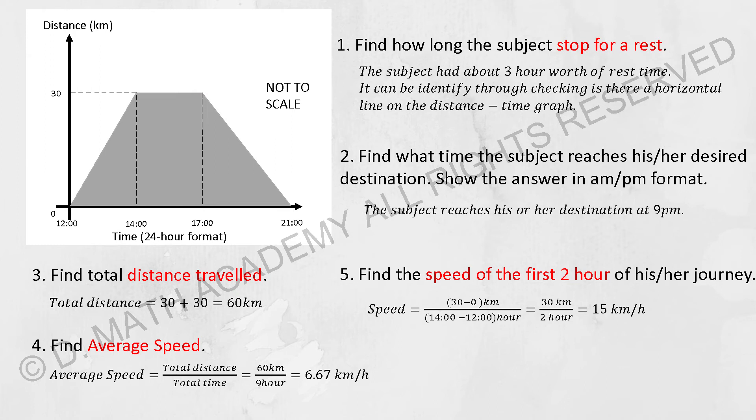In part 5, find the speed of the first 2 hours of the journey. For this, all you need to do is run the gradient formula where y2 minus y1 over x2 minus x1. You should get the result as 15 kilometers per hour.